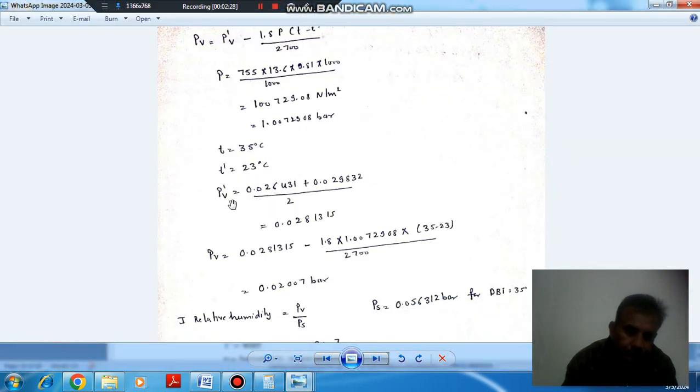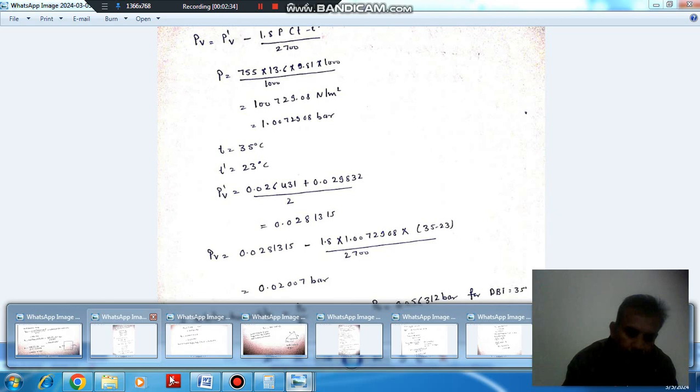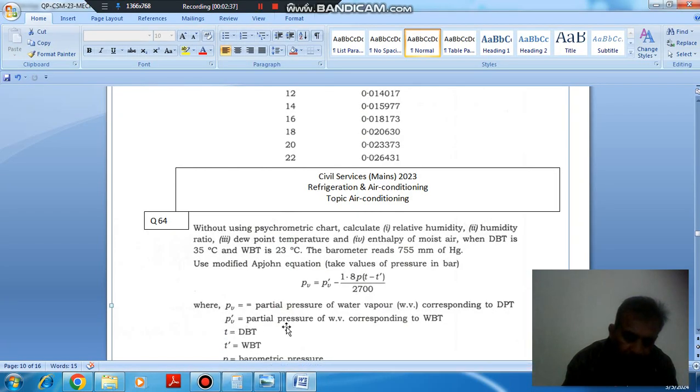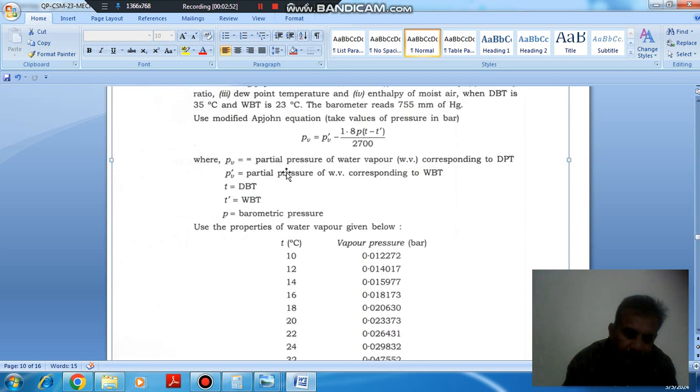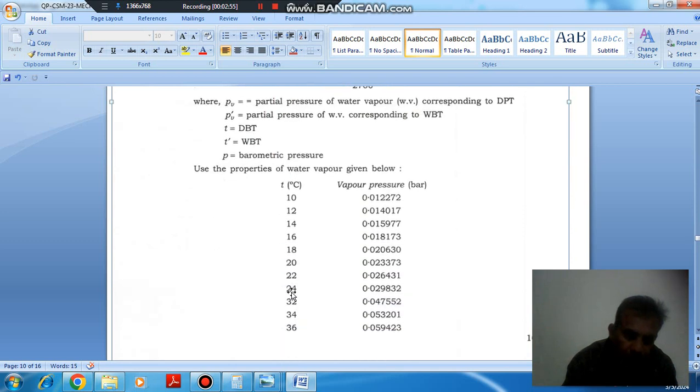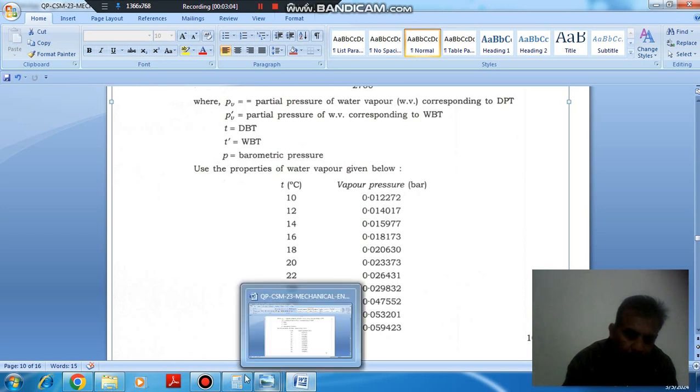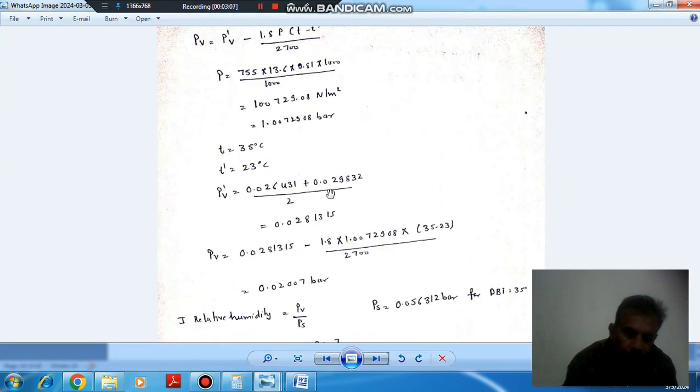And this P'_V is the partial pressure of water vapor corresponding to WBT. WBT is 23 degrees Celsius. Here 24 and 22 is given, so we take average of the two. Partial pressure of water vapor will be average of the two, or it will be 0.0281315 bar.